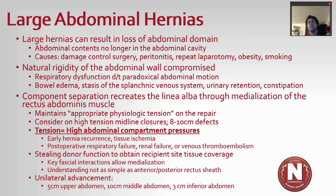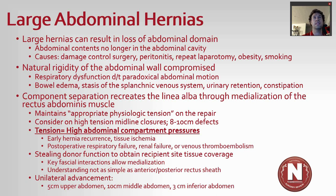Large hernias result in a loss of abdominal domain, where the abdominal contents can no longer fit in the abdominal cavity. The main causes are surgery, damage control surgery, peritonitis, repeat laparotomies, obesity, and smoking. The natural rigidity of the abdominal wall is compromised in these patients, so you'll sometimes see respiratory dysfunction with paradoxical motion — you can clearly see how that could occur from the pictures shown.